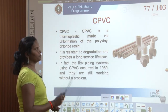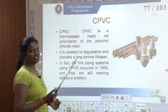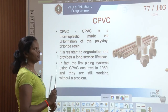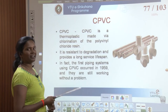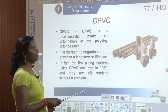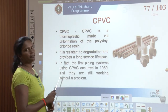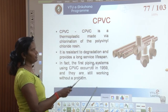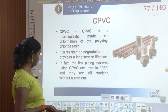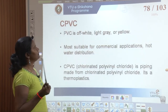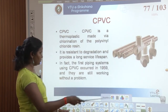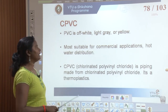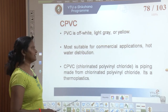Since all kinds of water — salt water, chlorinated water, waste water, soil water — are allowed through these pipes, the internal surface may corrode or degrade. CPVC gives a longer life comparatively. The first piping systems using CPVC occurred in 1951. CPVC pipes are commonly available in off-white, light gray, or yellow.